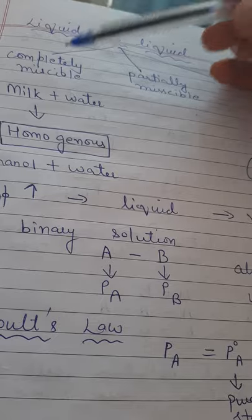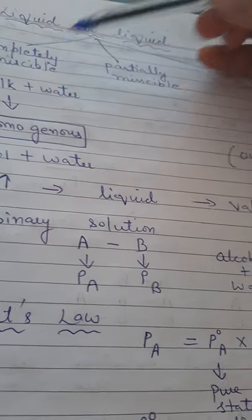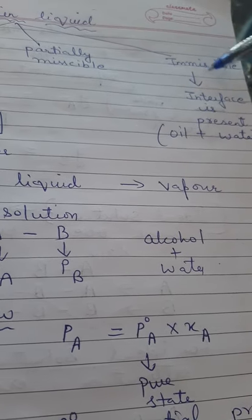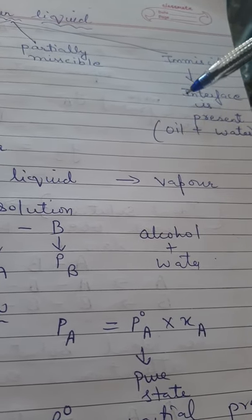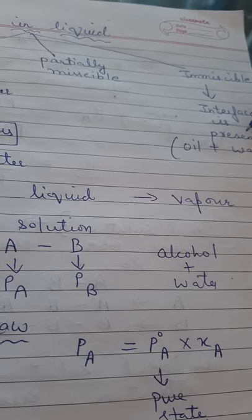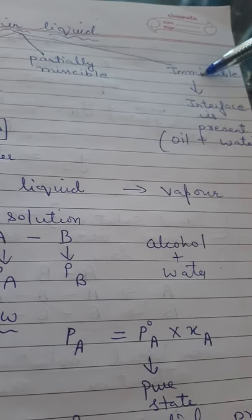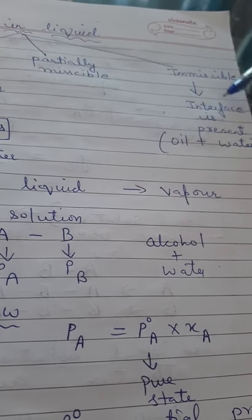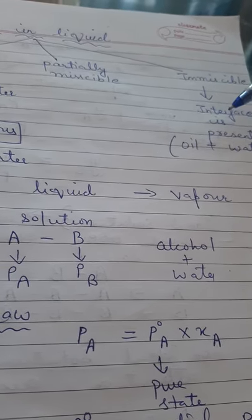Immiscible means an interface is present between those two components. For example, oil plus water - they are not completely miscible, they are immiscible. Oil plus water forms layers, and that layer is known as an interface present between those two types of liquids.